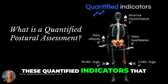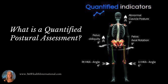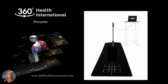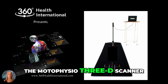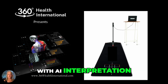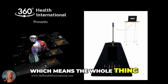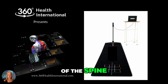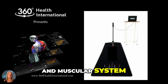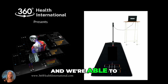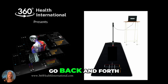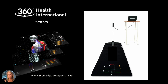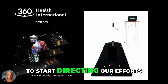We use these quantified indicators. This tool is the Moto Physio 3D scanner with AI interpretation, which means the whole thing from start to finish is under a minute. It has layers of the spine, skeletal system, and muscular system. They're overlaid and we're able to go back and forth between them to see where we need to start directing our efforts.